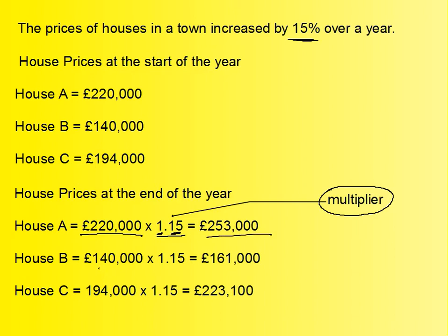Same thing here. We started off with £140,000, we multiply it by the multiplier which is 1.15, and so we get £161,000 as our answer. And in the last example, £194,000 times 1.15 will give us £223,100. The multiplier is the original value, represented by 1, plus the percentage — in this case 15%, which as a decimal is 0.15 — and that is what we multiply the original value by.